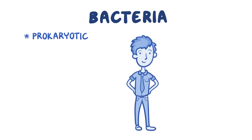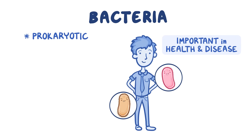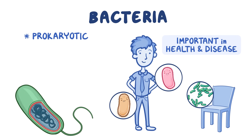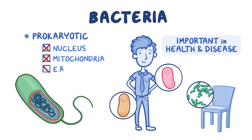Bacteria are prokaryotic cells that play an important role in human disease and health. They can cause disease but are also part of the human microbiota and live on our skin, body, and on everyday objects in our environment. When compared to eukaryotic cells, the structure of bacteria is less complex due to a lack of nucleus and membrane-bound organelles such as mitochondria, endoplasmic reticulum, and Golgi complexes.